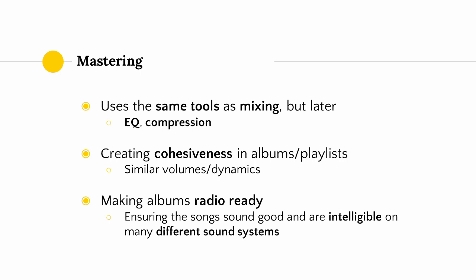For the last part of this section, let's talk a little bit about mastering. I am not a mastering engineer, but mastering uses many of the same tools as mixing, but later on in the process when most of the tracks have been mixed down and the final song has been rendered. Mastering engineers use EQ and compression. The two main objectives of mastering are: number one, to create cohesiveness in albums and playlists — making sure that tracks within an album play at similar volume levels so your listeners don't have to keep adjusting the volume knob; and number two, to make albums radio ready, ensuring that songs sound good and are intelligible on many different sound systems — everything from phone speakers to car speakers to headphones or a full home listening system.